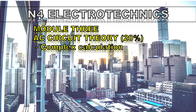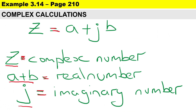In this video we'll be doing a calculation using complex numbers in rectangular and polar format, using example 3.14 from our textbook. For background: if z equals a plus jb, z represents the complex number, a plus b represents the real number, and j is the imaginary part of the complex number.